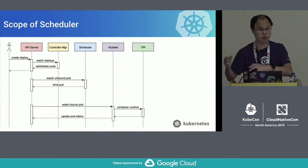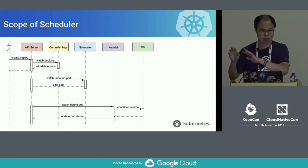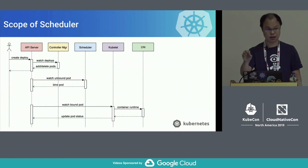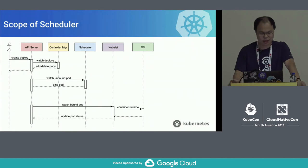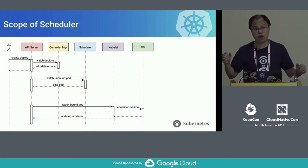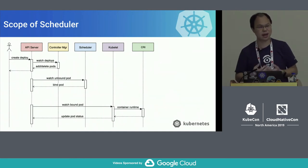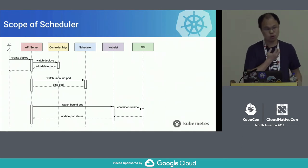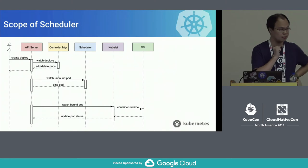So the replica set controller creates three pods. These three pods don't have the node name field set, because that's not the job of the controller manager. It creates three pods with the node name spec blank. By this step, controller manager's job is done. There are now three pods in the system without the node name set — then it's the scheduler's turn.